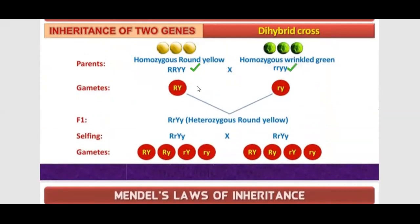When we form gametes, we will get the same gametes because both parents are homozygous. We have studied that when parents are homozygous, they produce the same gametes. In all gametes from one parent, that will be capital R capital Y. In all gametes from the other, they will be small r small y.